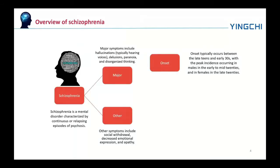Schizophrenia is a mental disorder characterized by continuous and relapsing episodes of psychosis. Major symptoms include hallucinations, typically hearing voices, delusions, paranoia, and disorganized thinking. Other symptoms include social withdrawal, decreased emotional expression, and apathy.